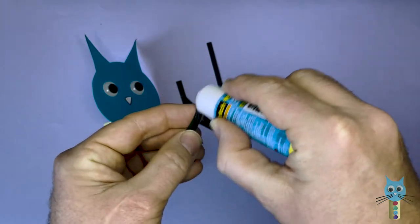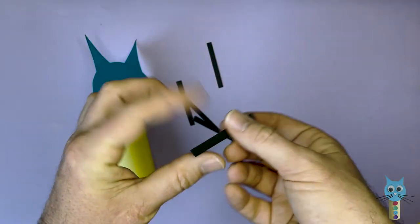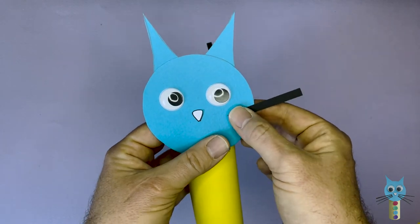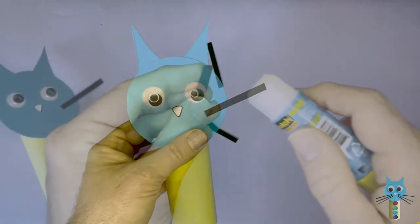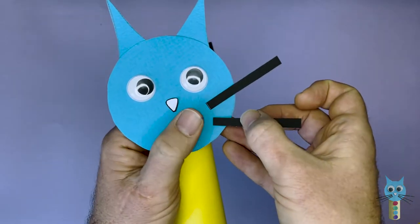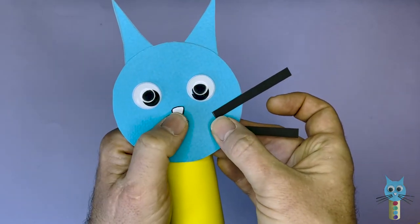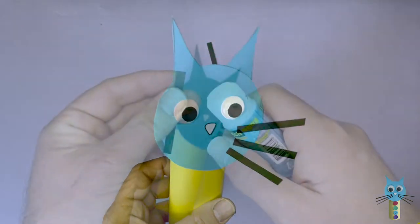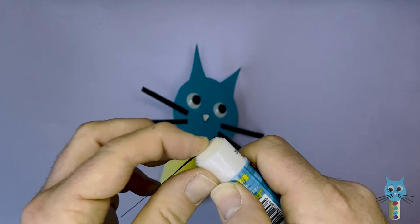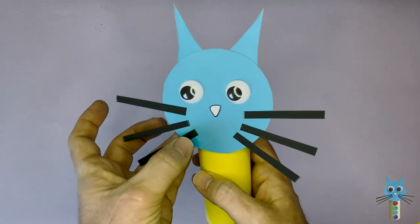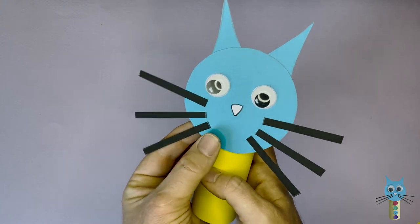Put some glue onto the back and then simply stick on the whiskers onto the face. Stick on three whiskers on the right hand side of the face. Put them into place wherever you like. And there we go. I have three on the right hand side. And now I'm going to go ahead and put another three on the left hand side. Try and keep them balanced and equal on both sides.